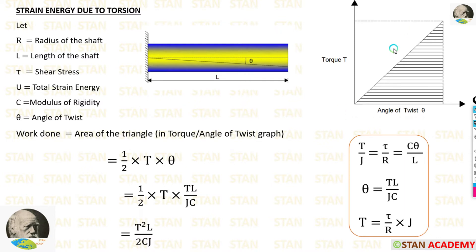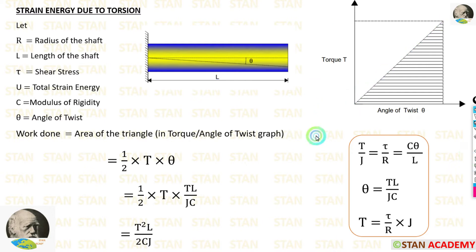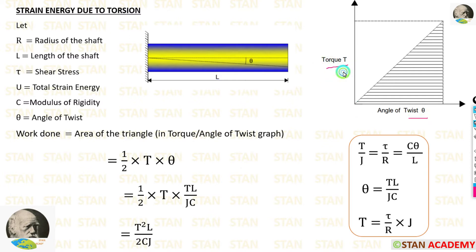We are going to derive an expression using the graph. When we plot the graph torque versus angle of twist, we will be having a triangular shaped graph because torque and angle of twist will be changing constantly. Using this graph, we can calculate the work done. Work done is equal to area of the triangle. The formula for area of the triangle is half into base times height. In this graph, we can take the breadth as theta and the height as T, so we can calculate the area.